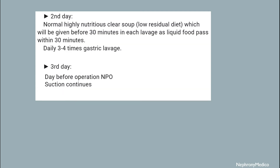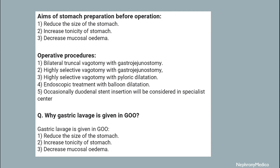Gastric lavage is done before each feed three days prior to surgery — first day, second day, and third day. The aims of stomach preparation before operation include reduction of the size of the stomach, increase in the tonicity of the stomach, and decrease in mucosal edema. Operative procedures include bilateral truncal vagotomy with gastrojejunostomy, highly selective vagotomy with gastrojejunostomy, highly selective vagotomy with pyloric dilatation, endoscopic treatment with balloon dilatation, and occasionally duodenal stent insertion can be considered in specialist centers.